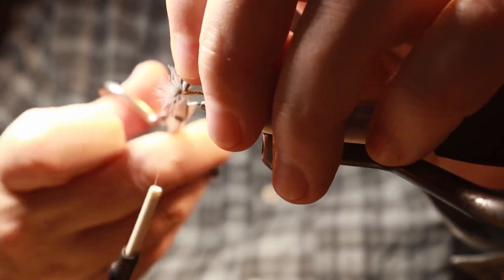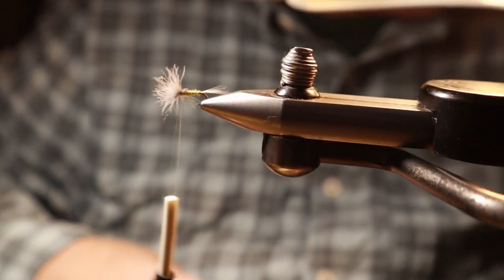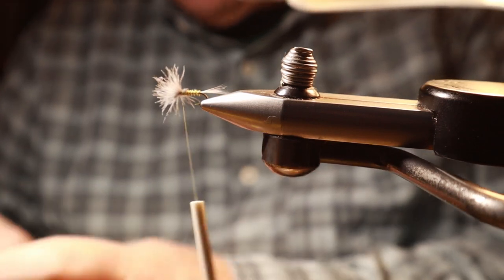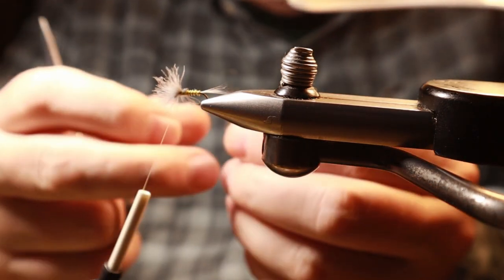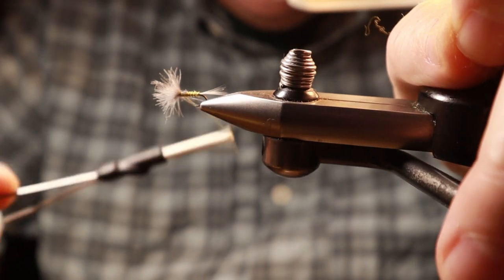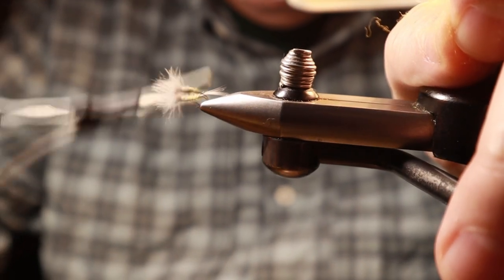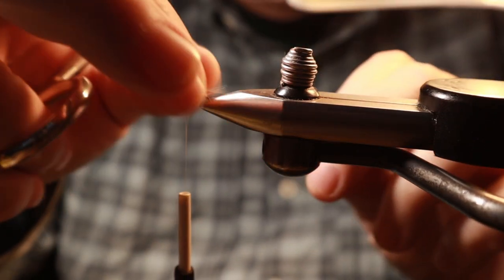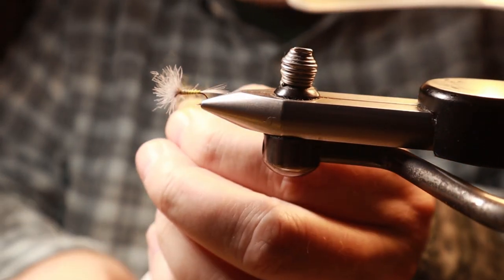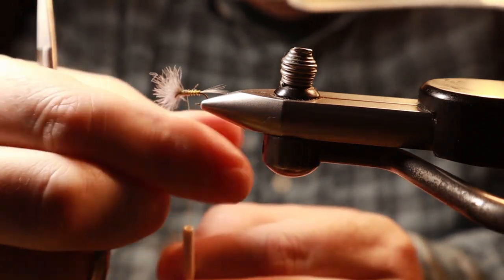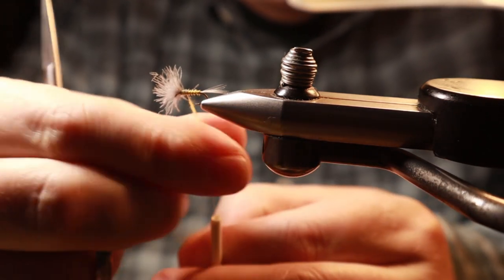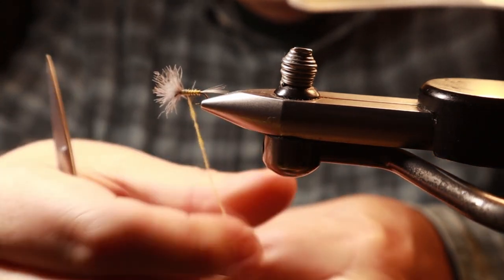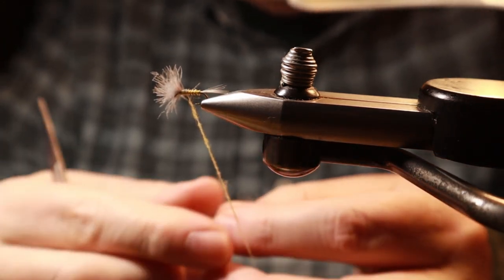Give it a few turns there, trim it off as close as you can, and then we're going to throw some dubbing behind it to cover up the tips and then in front of it to stand up that wing. I'm just going to get rid of a few stragglers. I keep this kind of thin but because you have to stand that post up I'm going to do a pretty long noodle here.